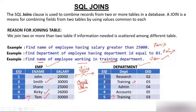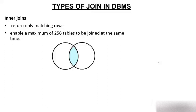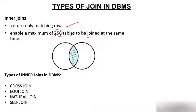So I've tried my best to explain why we need to join a table. Now, types of joins in DBMS: the first is inner join. Inner join returns only matching rows, and it can enable a maximum of 256 tables to be joined at the same time. This Venn diagram shows that inner join returns only the matching rows.